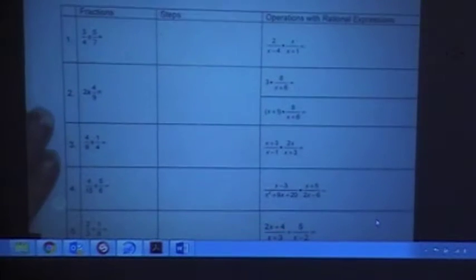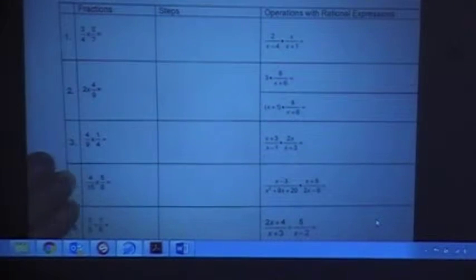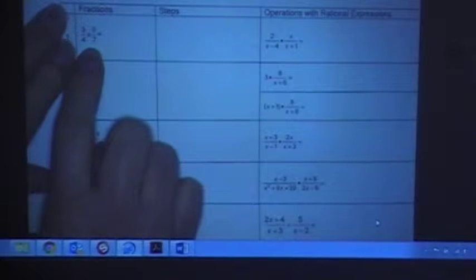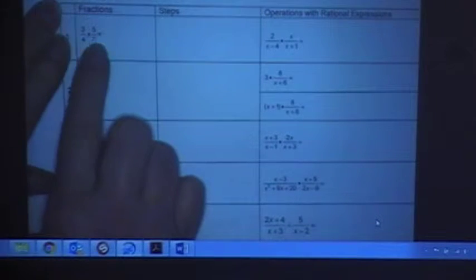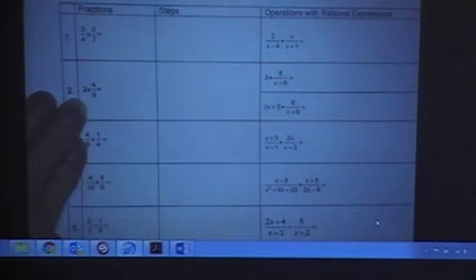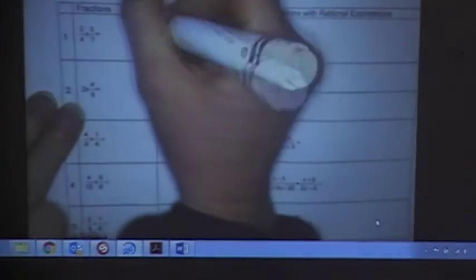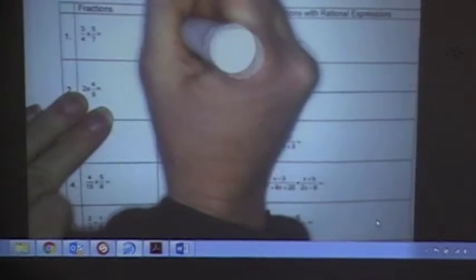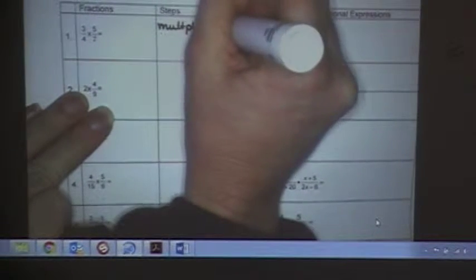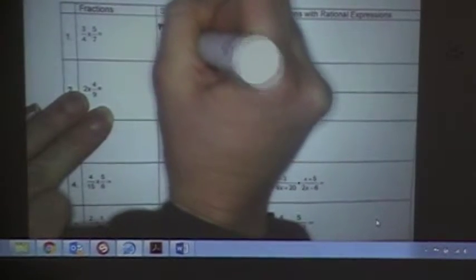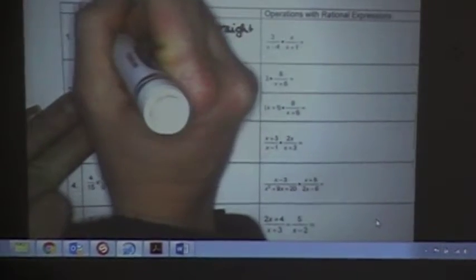We're going to review how you would multiply and divide fractions. So first, if I had these two fractions, 3 fourths times 5 sevenths, how would I multiply these? Straight. Straight across, right? You multiply straight across top and bottom. So that's the step. Multiply straight across. When I do that, I get 15 28ths.